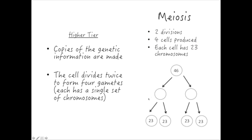For higher tier you do need to know the extra details. You need to remember that there are two cell divisions that take place which produce four gametes. Just like in mitosis, copies of the genetic information are made first — the DNA is copied — and then the cell divides twice to form four gametes: one cell division here and another cell division here, giving you four gametes at the end.